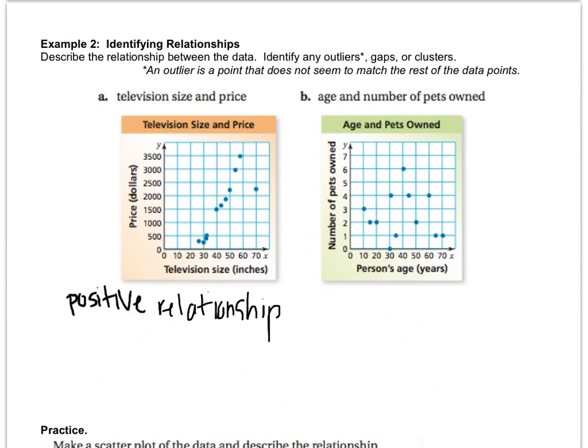They want us to identify any outliers, and they tell us an outlier is a point that does not seem to match the rest of the data. So is there a point on this graph that doesn't look like it really goes with much of anything? Like if we removed it, then it would definitely look much more linear. I think this point right here is probably what cancels it. This 70-inch television.